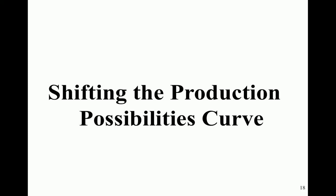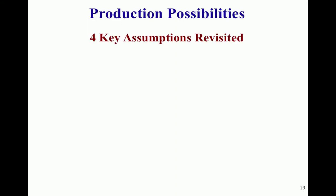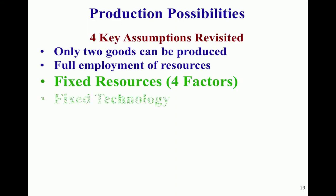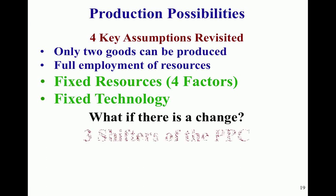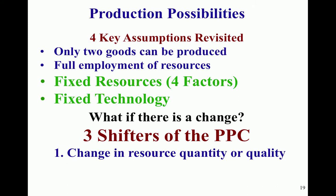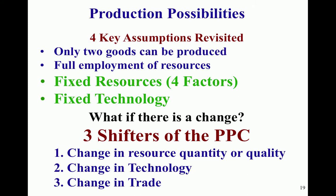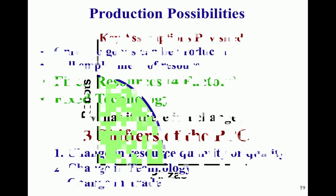Now the next thing we need to cover is shifting the production possibilities curve. Our four key assumptions — the ones in bold and highlighted — are the ones we're going to play with when we talk about shifting a PPC. There could be a change in resource quality or quantity, a change in technology, or a change in trade. Trade wasn't one of our four key assumptions, and we'll investigate that more in class on Monday.